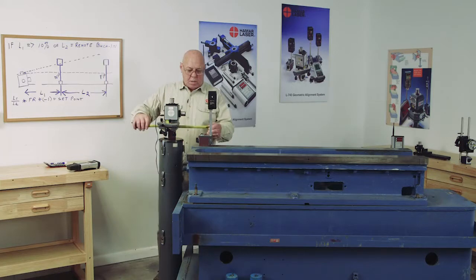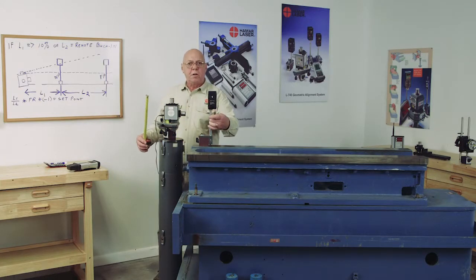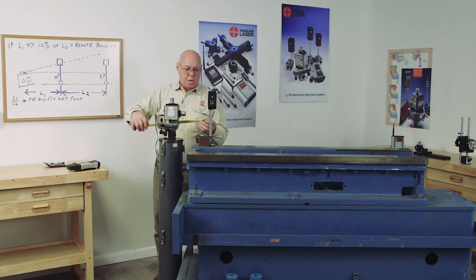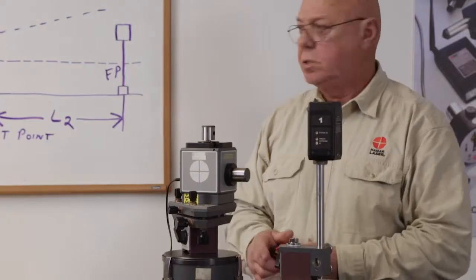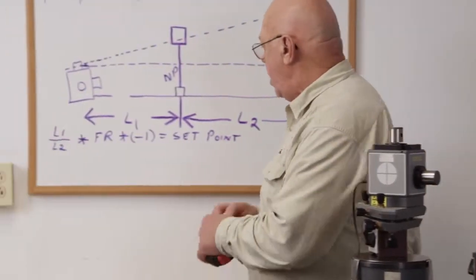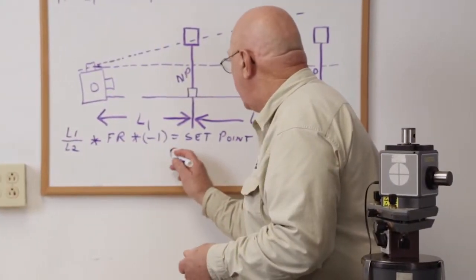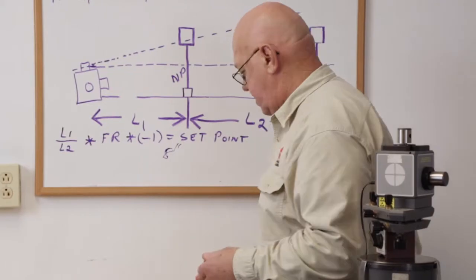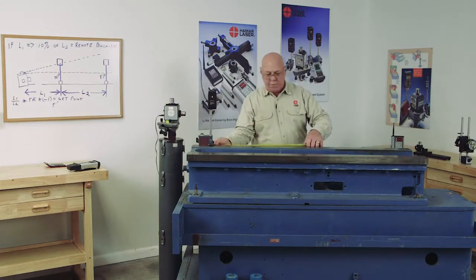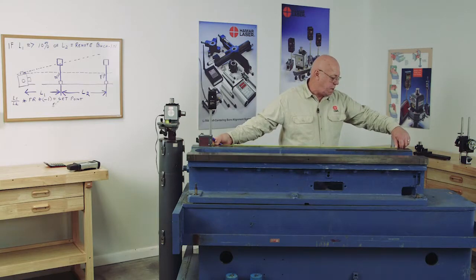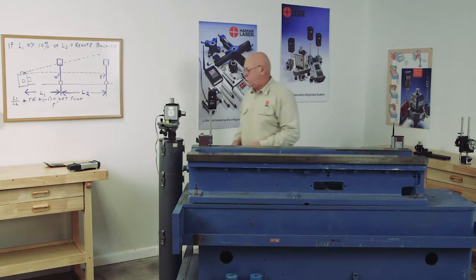If I measure this out, and I measure to the center of this post, to this pivot point here, when I measure that out, I've got 8 inches. So, I'm going to call L1 8 inches. Now, L2, if I take it from here to my point down there, I'm at 47 inches.